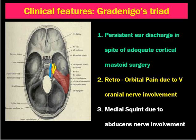The second component is retroorbital pain due to fifth cranial nerve involvement. The fifth cranial nerve lies in relation to the petrous apex in Meckel's cave, so it may be compressed, leading to retroorbital pain. The third component is medial squint due to sixth cranial nerve involvement. The sixth cranial nerve is also in relation to the petrous apex, so if it is damaged, there will be an unopposed action of the medial rectus muscle, pulling the eye medially and causing medial squint.